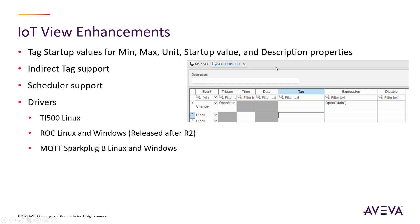We've added a scheduler. The scheduler will allow you to trigger based on three different types of events, whether it's change, clock, or calendar. That will allow you to use the built-in scripting functions, essentially evaluate those, and then write to a tag — very flexible and gives you another nice interface for the built-in scripting language. In addition, we've enhanced some drivers to be available on IoT View. The TI500 Linux driver support, as well as MQTT with Sparkplug B support, has now been added on Linux. We've also added support for an Emerson ROC controller, which will now be available on Linux and Windows, and that'll be released slightly after the R2 release. Look for that available soon.